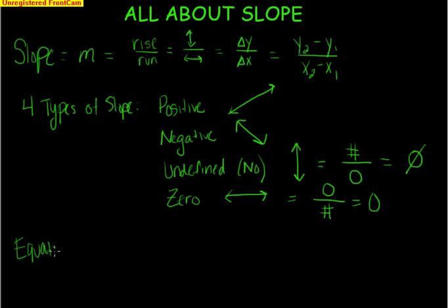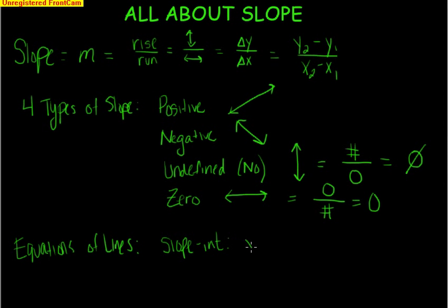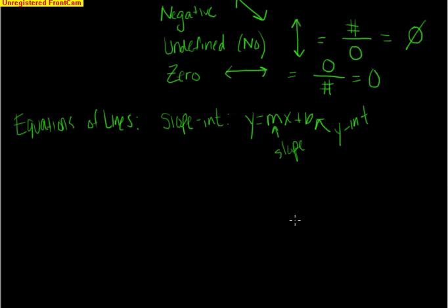For equations of lines, we have several formulas. The first and most common is slope-intercept form: y equals mx plus b, where m is the slope and b is the y-intercept — where it crosses the y-axis. The great thing about this formula is you can write any equation as long as you know the slope and the y-intercept, or even just a point and the slope. It's a very versatile formula.